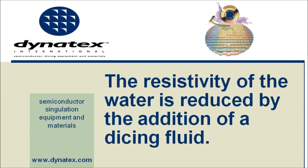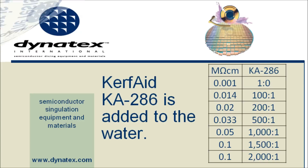Fortunately, the solution to the problem is a relatively straightforward one. The resistivity of the dicing water can be adjusted by adding the appropriate dicing fluid. In this case I used Curfade — Curfade 286 to be specific. I performed a simple experiment in which I varied the dilution ratio of Curfade to DI water and tested for resistivity. I have created a table that lists the results. As you can see, it is merely a matter of using a specific amount of Curfade 286 to set the resistivity of the dicing water.